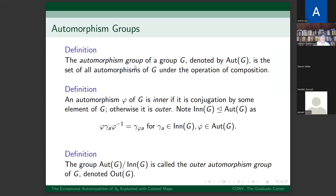The automorphism group of a group G, denoted Aut(G), is the set of all automorphisms of G under the operation of composition. An automorphism phi of G is inner if it is conjugation by an element of G; otherwise it is outer. The inner automorphisms form a normal subgroup of the automorphism group of G, because phi composed with an inner automorphism composed with the inverse of phi is still an inner automorphism. The group G mod the inner automorphisms is called the outer automorphism group of G, denoted Out(G).